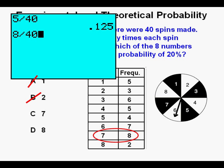To try answer C — how many times the spinner lands on 7 — we have 8 divided by 40. This time we get 0.2 or 20%. That means number 7 is the correct answer, so we circle the correct answer: C.